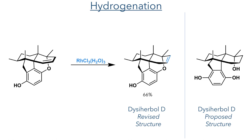Using this same intermediate, they could then form Dissiherbal D. This was done using an alkene rearrangement with a rhodium trichloride complex, forming the product in a 66% yield. As with Dissiherbal A, the characterisation data matched the natural substance, prompting a revision of the previously reported structure.